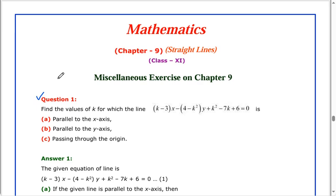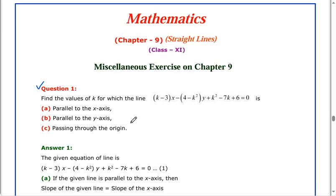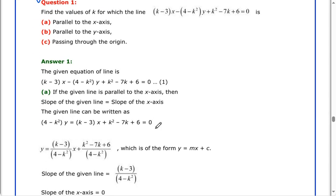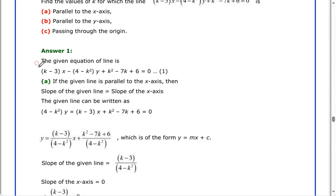I am going to read question number 1: find the value of k for which the line has three options — parallel to the x-axis, parallel to the y-axis, and passing through the origin. Answers of all questions are already prepared in PDF form. The given equation of the line is (k minus 3)x minus (4 minus k squared)y plus k squared minus 7k plus 6 equal to 0. Suppose this is equation number 1.